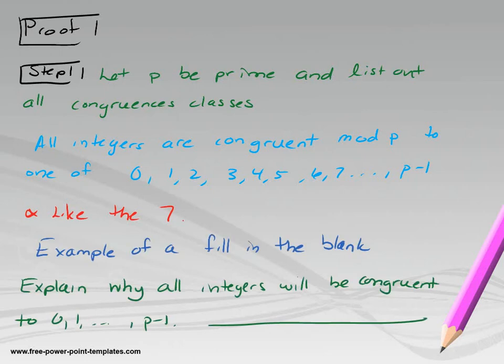That's why it's good to have a number example in mind when you start seeing abstract letters — you can think of something with a number in it. Here's an example of the fill-in-the-blank: explain why all integers will be congruent to 0, 1, dot dot dot, p minus 1. Why don't you have to list p? Because p is already in the congruence class of 0 — that's why p doesn't have to be listed. So under each line I write in the proof, you should be able to form your own fill-in-the-blank question.